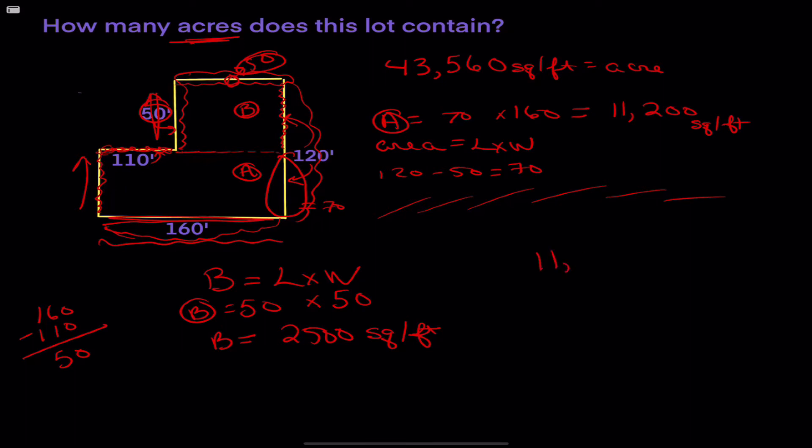So we're going to add the 11,200 square feet from A and we're going to add the 2,500 square feet from B for a total of 13,700 square feet. Well, if there's 13,700 square feet here, that's going to be less than our full acre. So I'm going to take that 13,700 to find out how many acres are there. If we know there's 43,560 square feet in an acre, that gives us 0.31 acres. So that's the answer to our question. This particular lot has 0.31 acres.